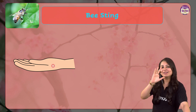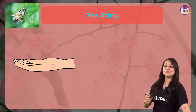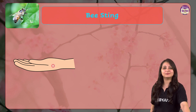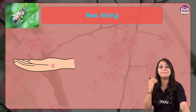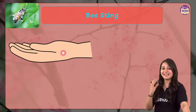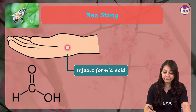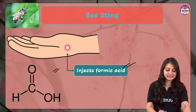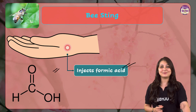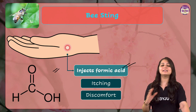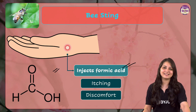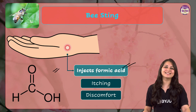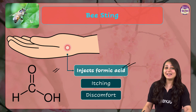Look at the redness — this light swelling leading to instant sharp burning pain that's happening over here. This is happening because the bee sting actually injects an acidic liquid, that is formic acid (HCOOH), into the skin.